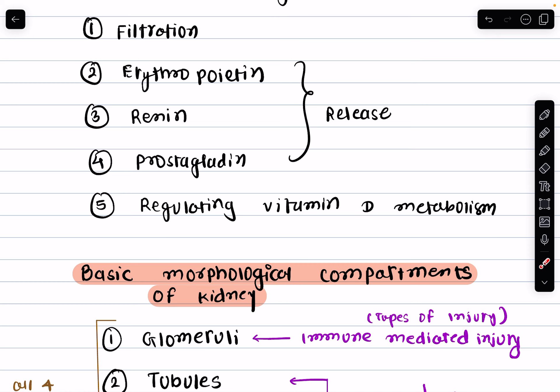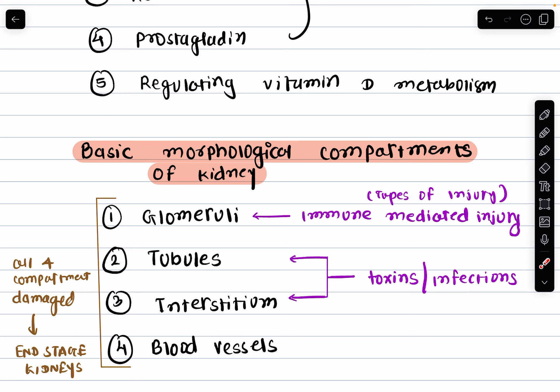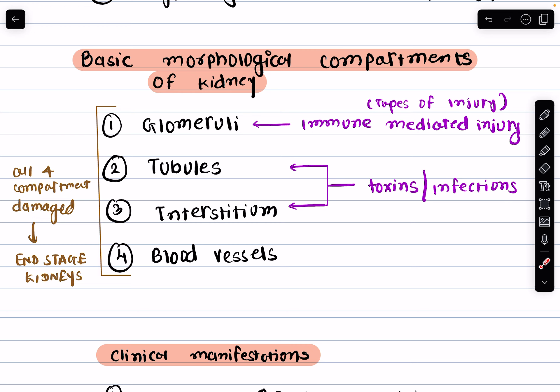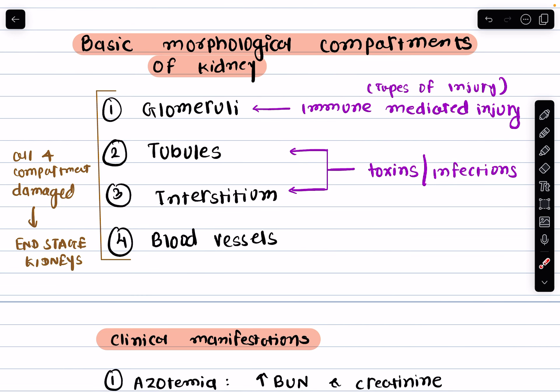Without the kidneys, our bones would be weak and fragile. Now let's break down the basic morphological compartments of the kidney. The first compartment is the glomeruli — these tiny structures are often affected by immune-mediated injuries, think of them as the initial filtration unit. The next are the tubules, which can be damaged by toxins and infection, and they play a vital role in reabsorbing essential substances back into the blood.